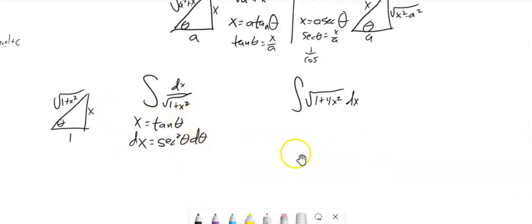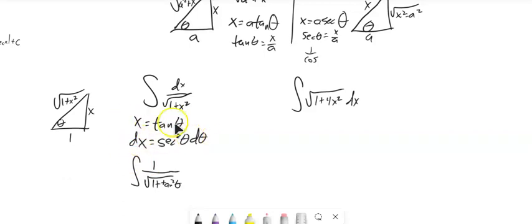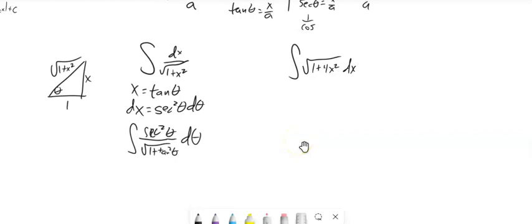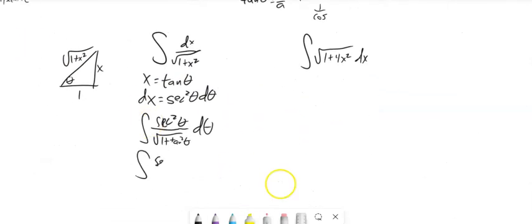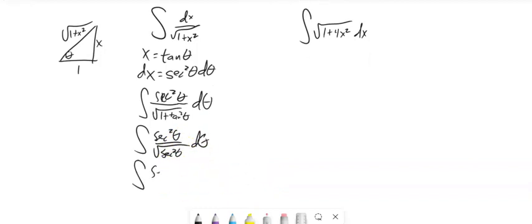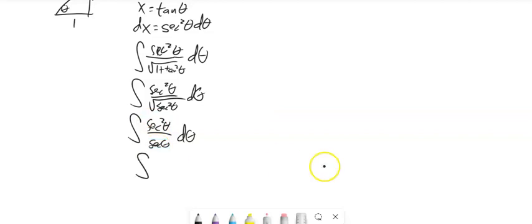So let's do this substitution. The integral of 1 over √(1 + x²) — x is tangent, so √(1 + tan²θ) is in the denominator. dx is replaced with sec²θ dθ. From the identity 1 + tan²θ = sec²θ, this becomes sec²θ over √(sec²θ). The square root of sec²θ is just sec θ, so we get sec²θ over sec θ, which is just the integral of sec θ.